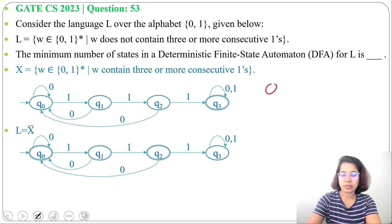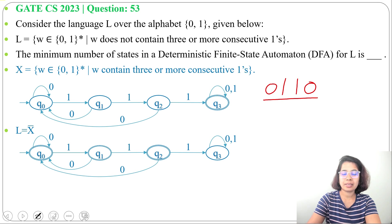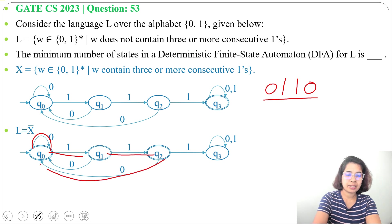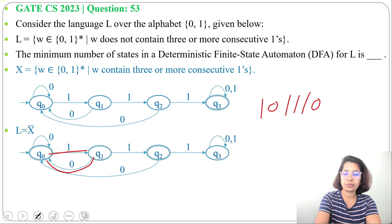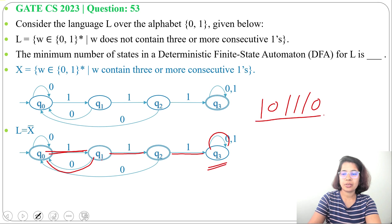Let's verify with the string '0, 1, 1, 0'. This should be accepted since it has no three consecutive ones. Trace: '0' — self-loop at Q0; '1' — go to Q1; '1' — go to Q2; '0' — go back to Q0. Q0 is a final state, so it accepts. Now try '1, 0, 1, 1, 1, 1, 0': trace leads to Q3 (dead state), so it is not accepted.